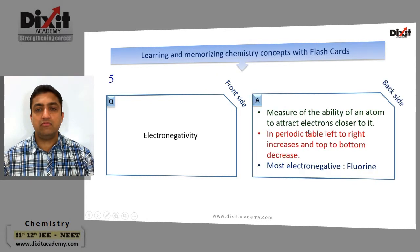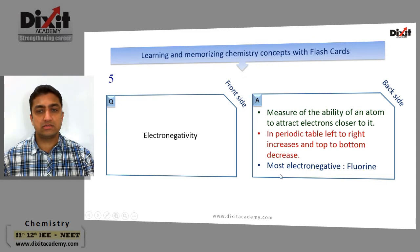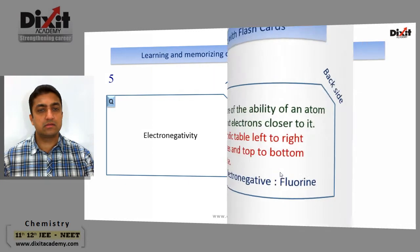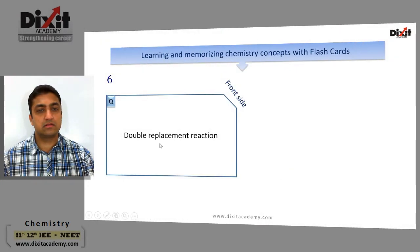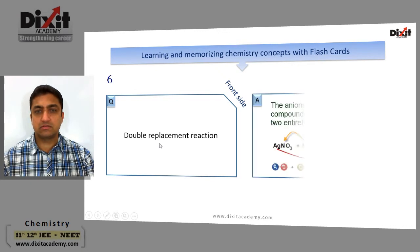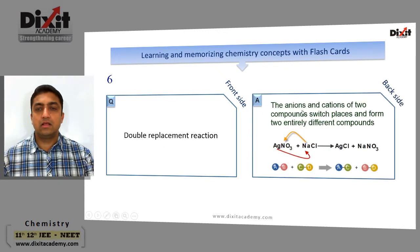Electronegativity: the measure of the ability of an atom to attract electrons closer to it. In the periodic table, from left to right it increases, and from top to bottom it decreases. The most electronegative element in the periodic table is fluorine.